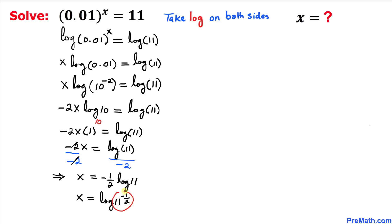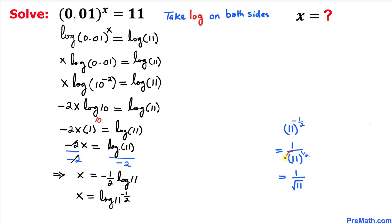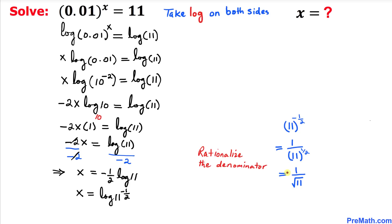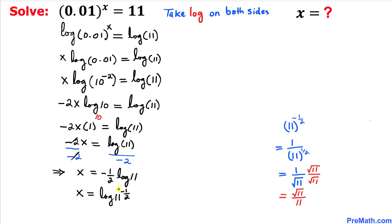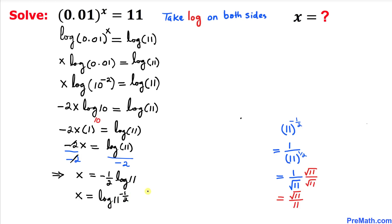Let's focus on 11 to the power negative 1 over 2. We can make the negative exponent positive by placing it in the denominator, giving 1 over 11 to the power 1 over 2. We know that 11 to the power 1 over 2 is the same as the square root of 11. Now let's rationalize the denominator by multiplying top and bottom by square root of 11: the numerator becomes square root of 11, and the denominator becomes 11.